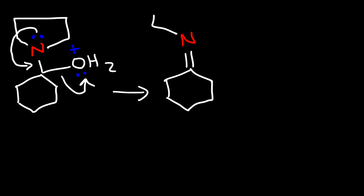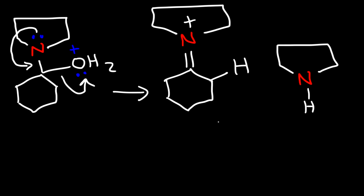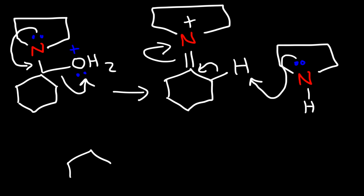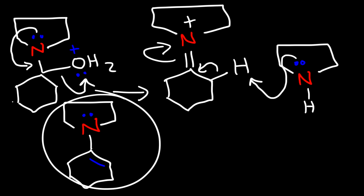There's one more step in the process. We need to use a weak base to remove the hydrogen and form the enamine, because right now we have an aminium ion. We use the secondary amine to do this — the nitrogen grabs the hydrogen and a pi bond is formed, breaking this bond. And so that's how we get the enamine intermediate, which we can use for alkylation, acylation, and participation in a Michael reaction. That's how you can propose the mechanism for the Stork enamine reaction. Thanks for watching.